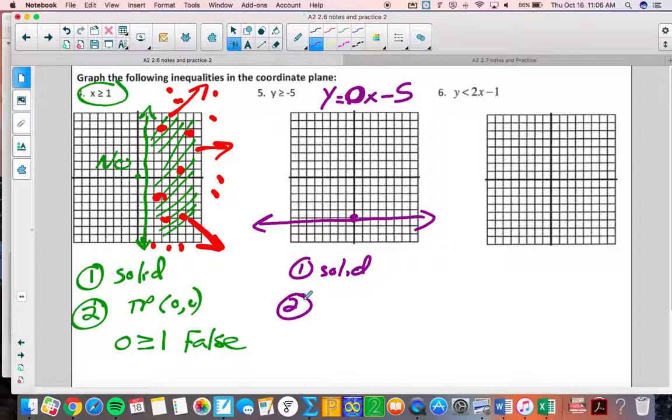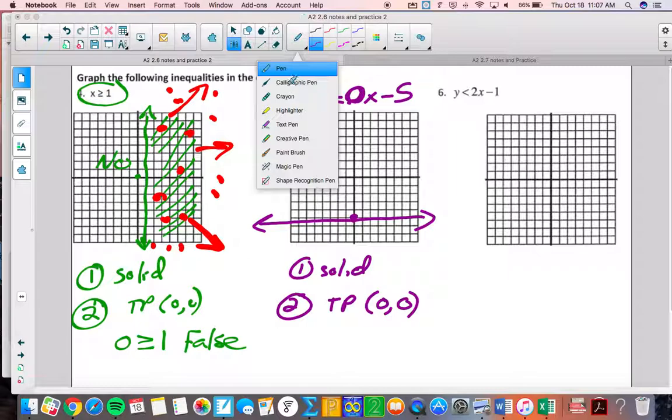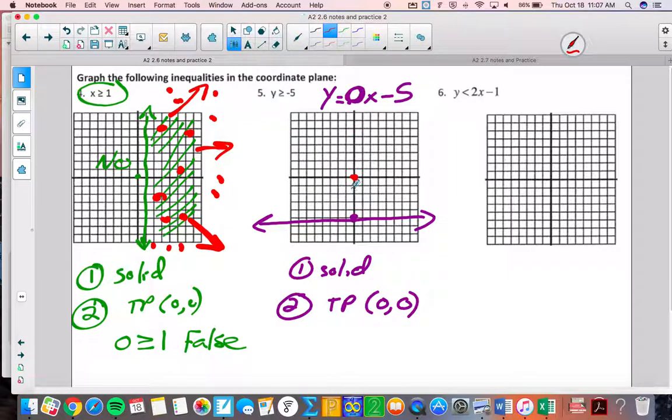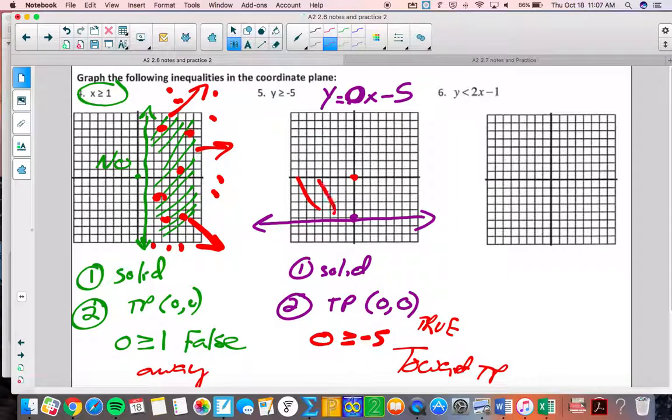Now, we just need to figure out where to shade. So, we're going to do a test point. The test point, I'm going to do 0, 0. You can do any point, as long as it's not on the line. I like to do a picture of where I'm testing. I'm testing right there. I'm going to plug 0 in for y. Is 0 greater than or equal to negative 5? Yes. Careful, right? Because I'd rather owe someone nothing than owe someone 5 bucks. So, this is true. So, I'm going to now shade towards the point, towards the test point. Whereas, over here, it was false. So, we shaded away on the other side of the line from the test point.